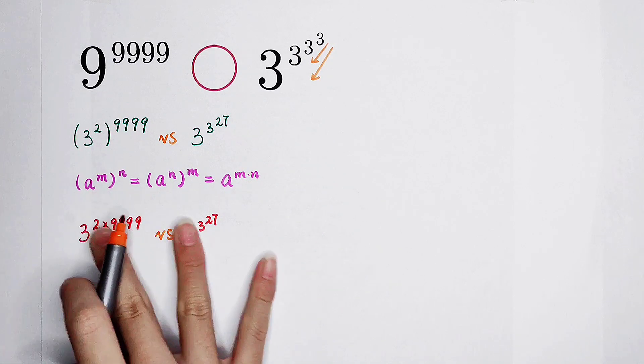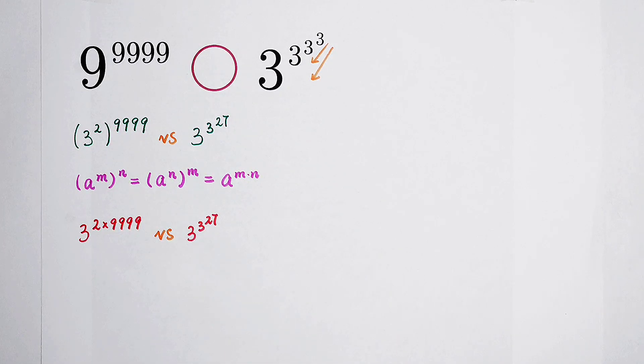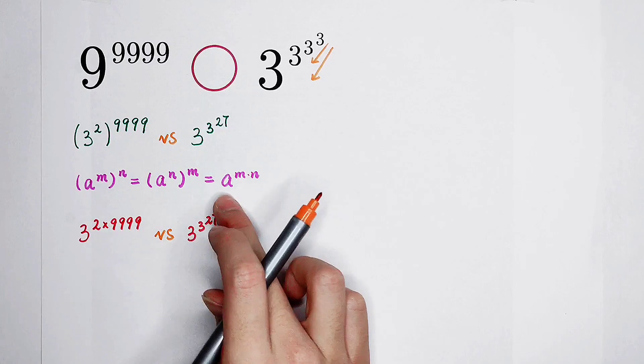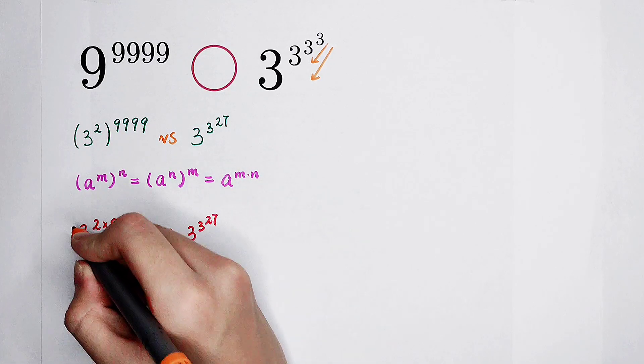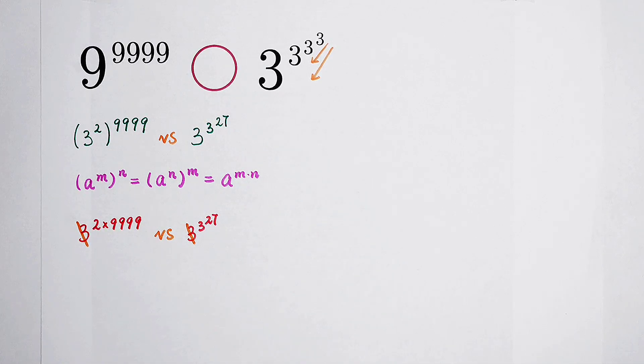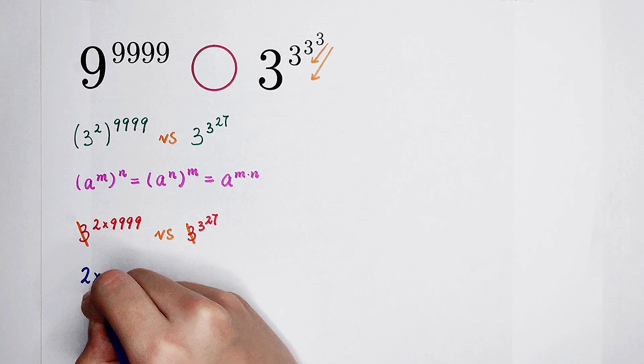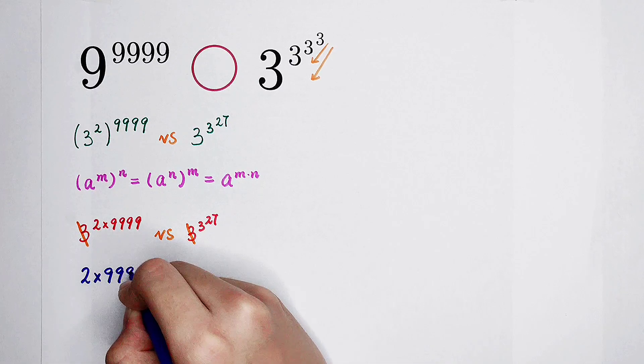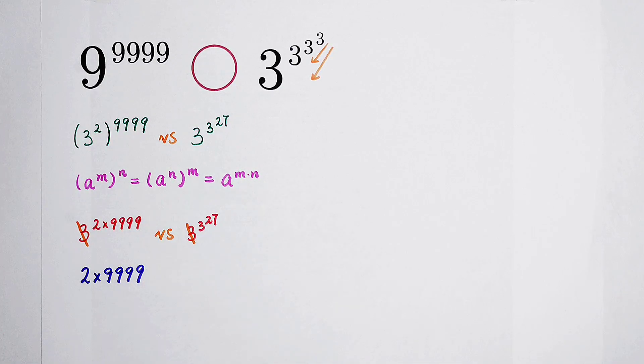Now if we want to compare these two numbers, of course we have to only compare the exponents because they have the same base 3 and 3. We can cancel. So now we have to only compare the exponents.